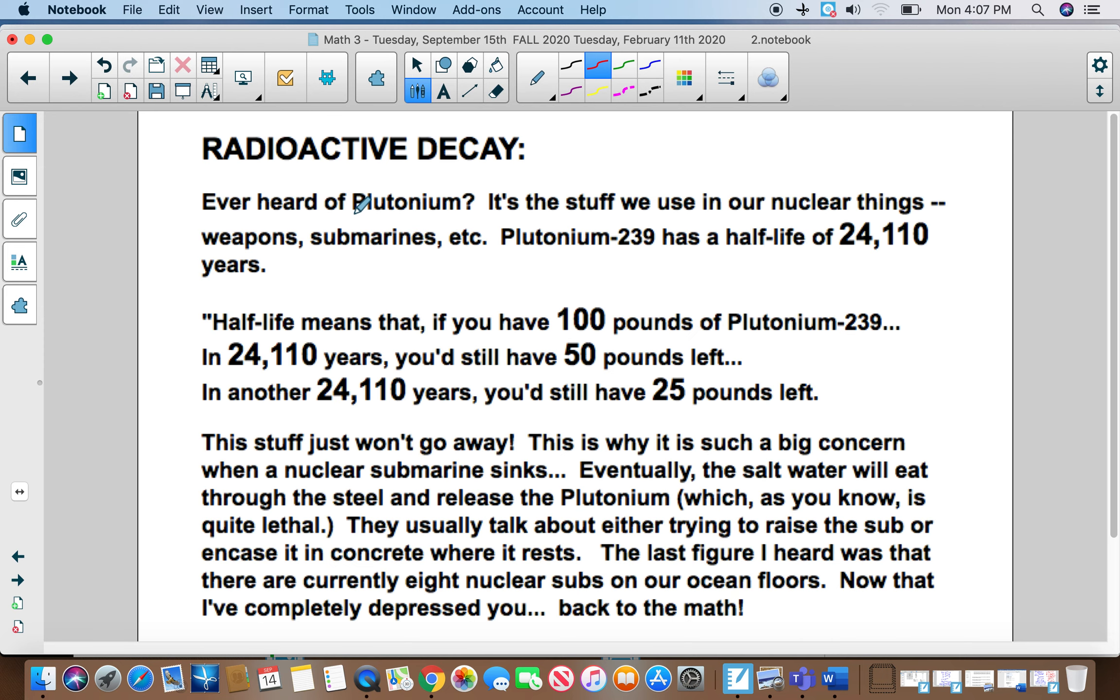If you've ever heard of plutonium, it's the stuff we use in our nuclear things—weapons, submarines, etc. Plutonium-239 has a half-life of 24,110 years. That's a pretty big half-life, so it takes that long to go away. That's why we don't want to have these nuclear things, because their half-life is not really that small.